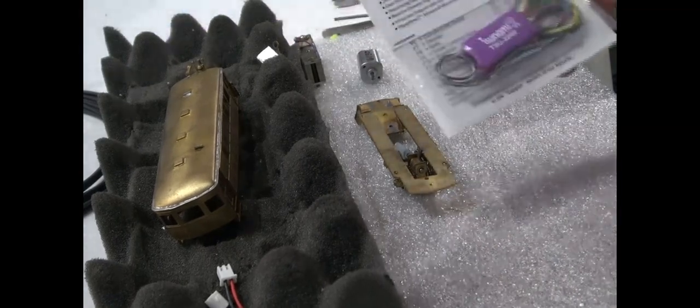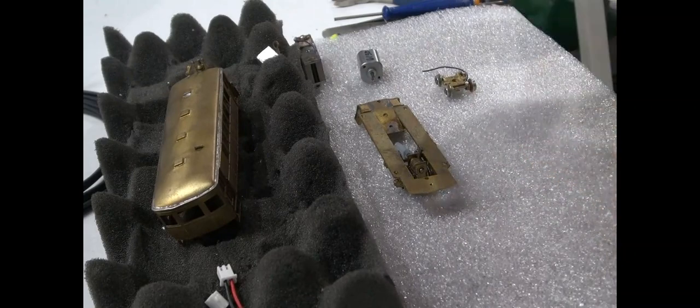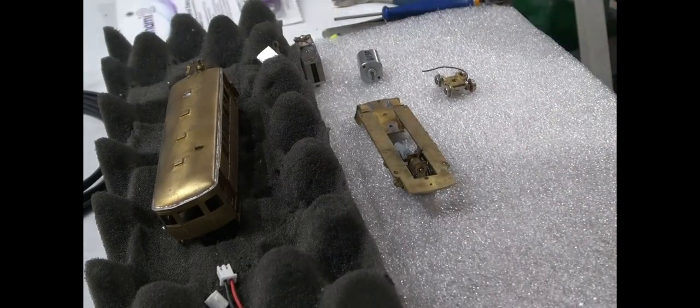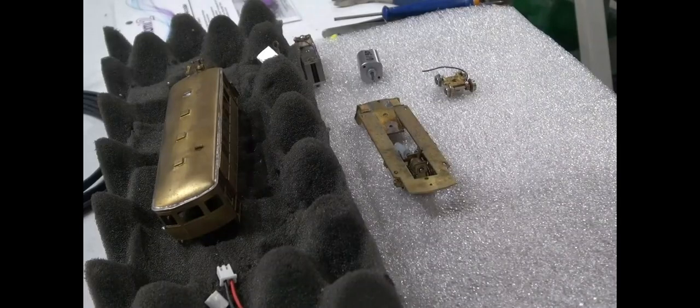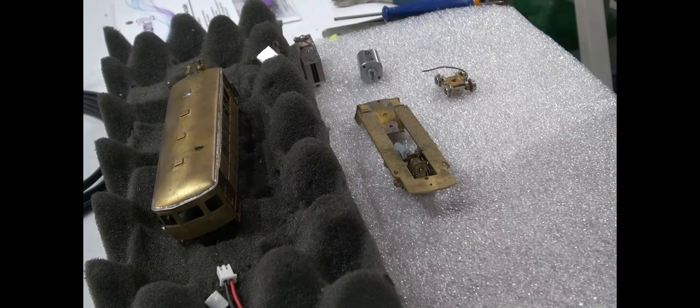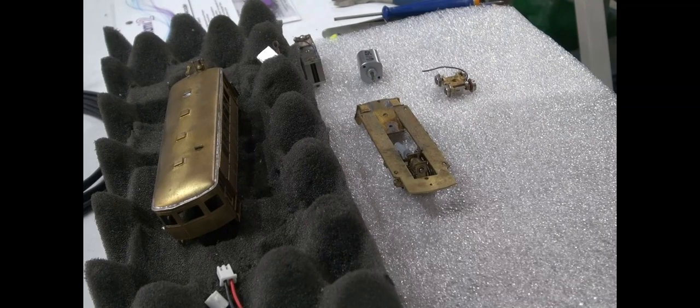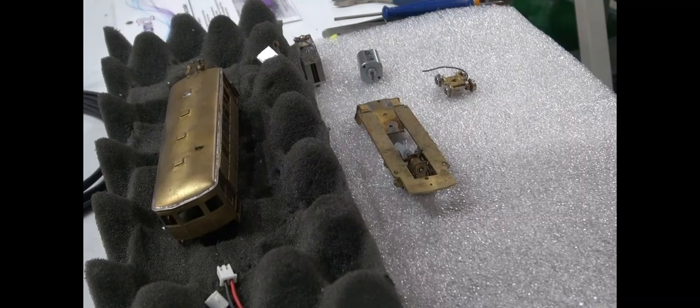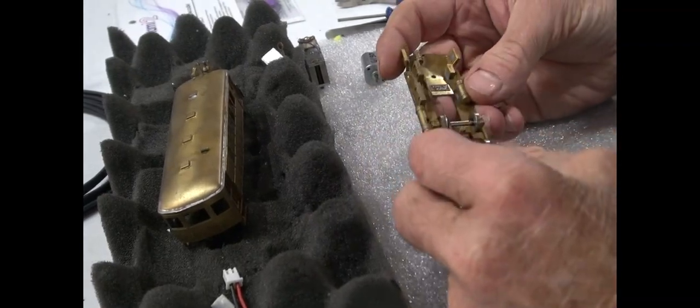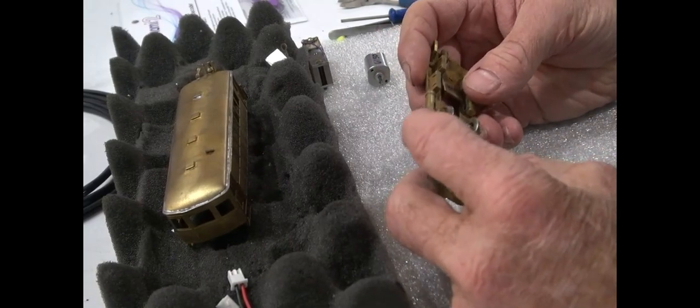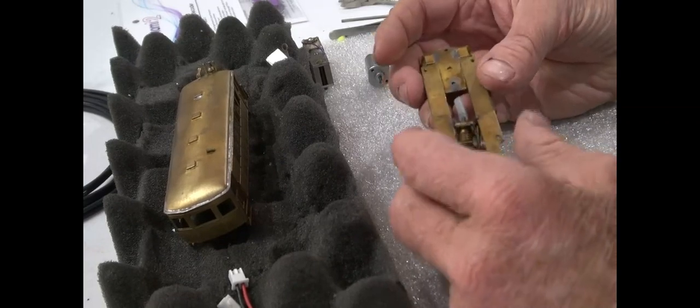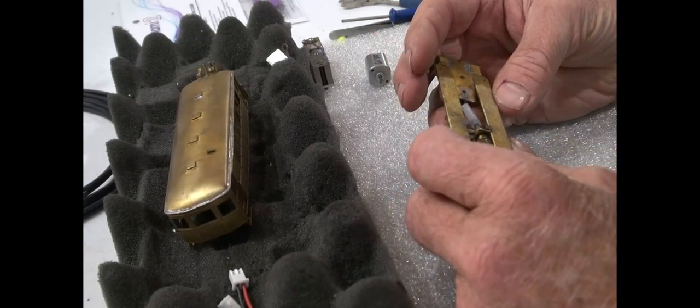We are also going to put a TCU 2200 sound decoder in it which is the gasoline model. It is called the gas or other decoder. So, we are going to make this DCC which is going to be interesting because the manufacturer made the frame as one of the poles for the motor as DC.